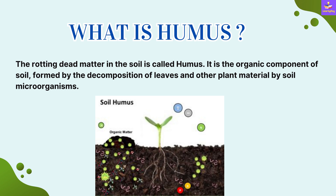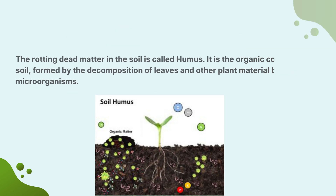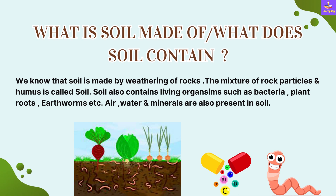Before we discuss what soil is made of, I will tell you what humus is. The rotting dead matter in the soil is called humus. It is the organic component of the soil, formed by the decomposition of leaves and other plant material by soil microorganisms.